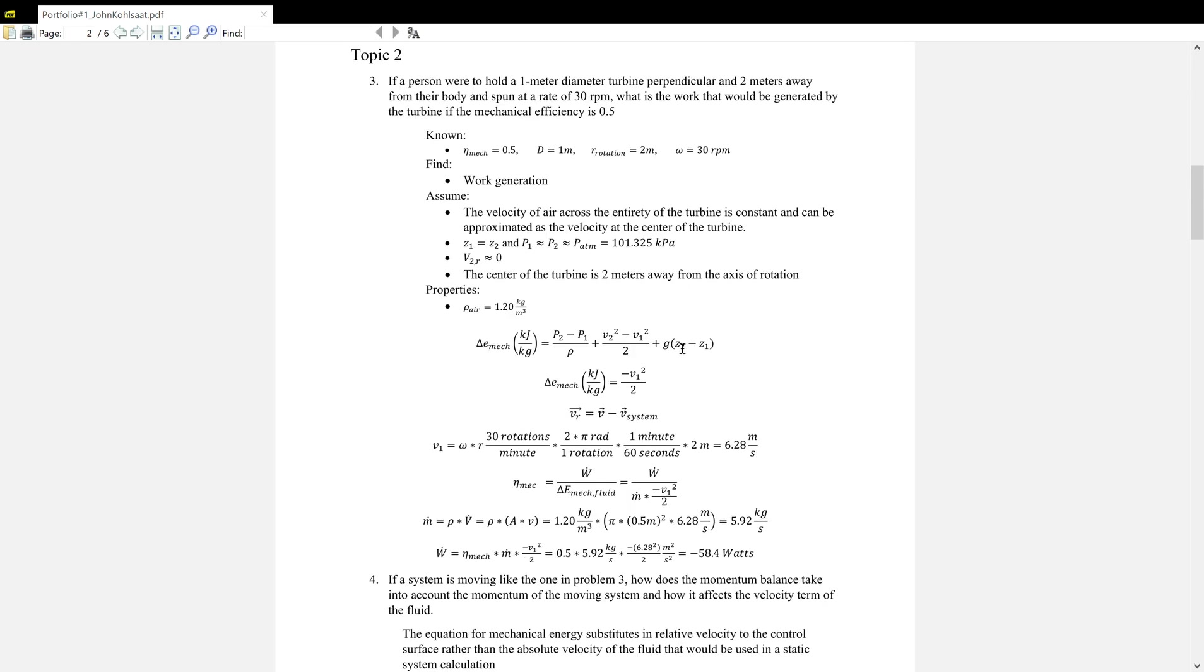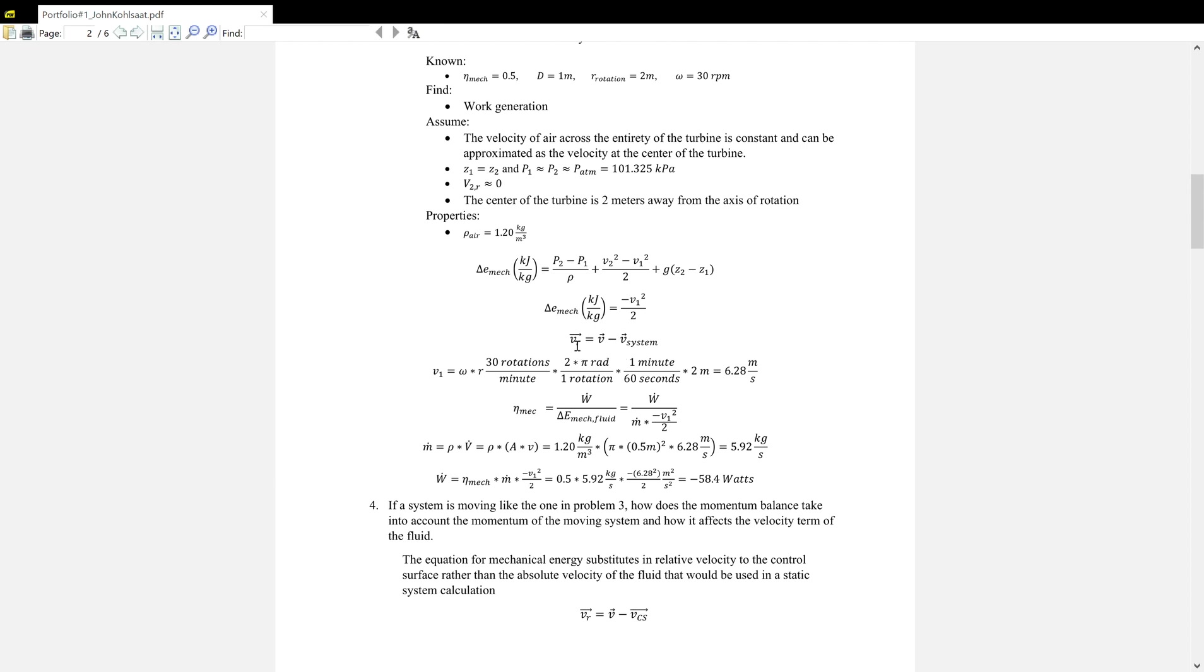Density of air, and then we have our E-mechanical equation, which is essentially a reorganization of Bernoulli's, which can simplify down to negative V1 squared over 2 because P2 equals P1, Z2 equals Z1, and V2 relative is said to be zero. Then we have to find V1 relative, which will essentially be the velocity of the system, but in the negative direction. And so we can find the velocity of the system, which is equal to V1, to be omega R, which gets to 6.28 meters per second.